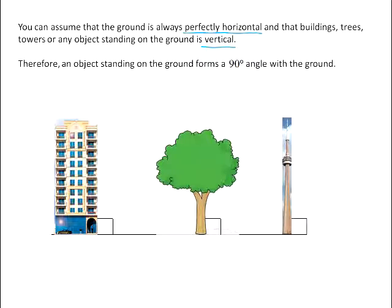And whenever you have something that is completely horizontal and something that is completely vertical, the angle that is formed between them is always 90 degrees. So you can see here that that's illustrated. This line here represents the ground level, and we can see that the angle formed with the building, with the tree, with the tower, with all of these objects, we can assume that those are 90 degree angles.